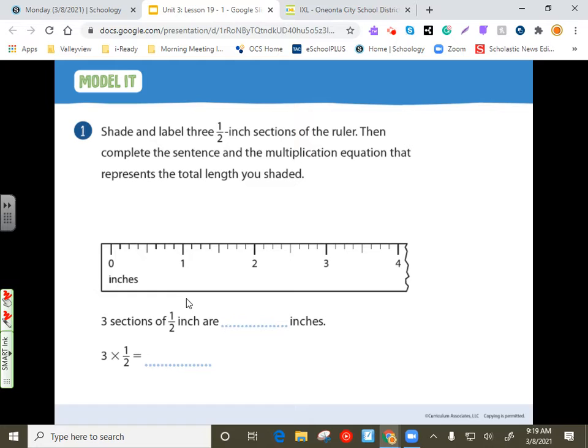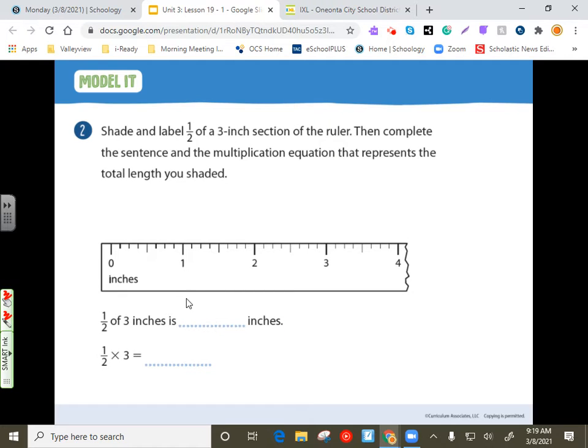Let's look at number two. This one says, shade and label half of a three-inch section of the ruler. So we've got zero, I've got three, and it wants the halfway point for this. So half of three is one and a half, so that would be right here.